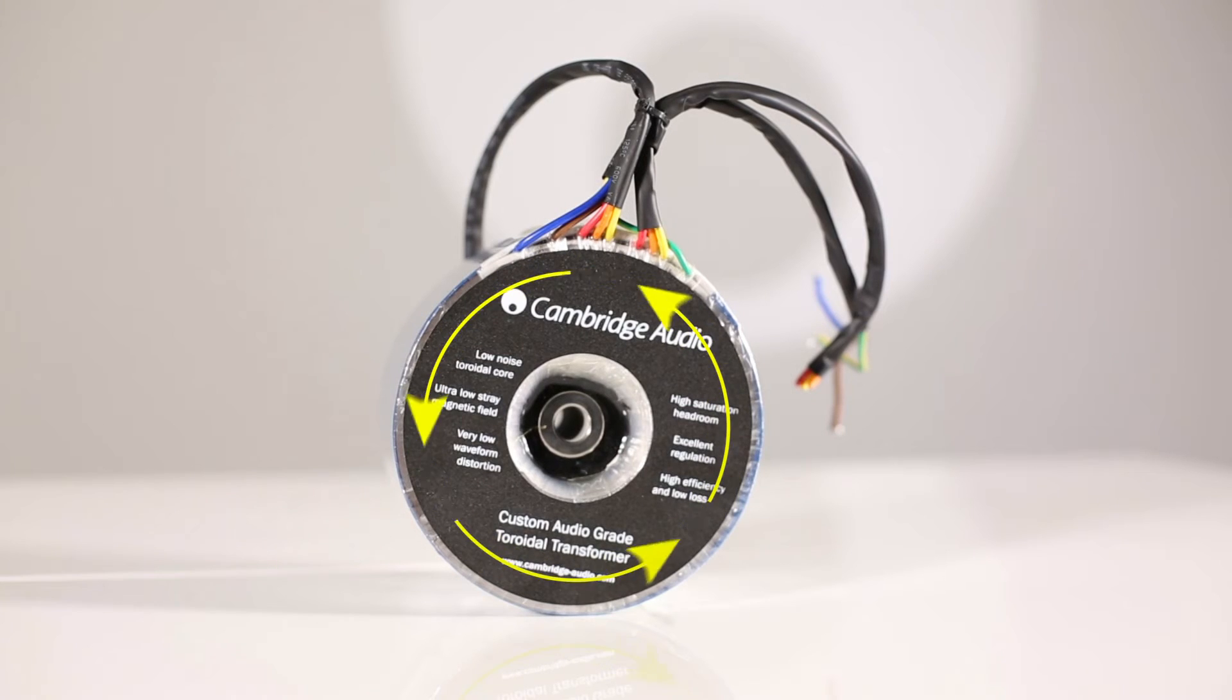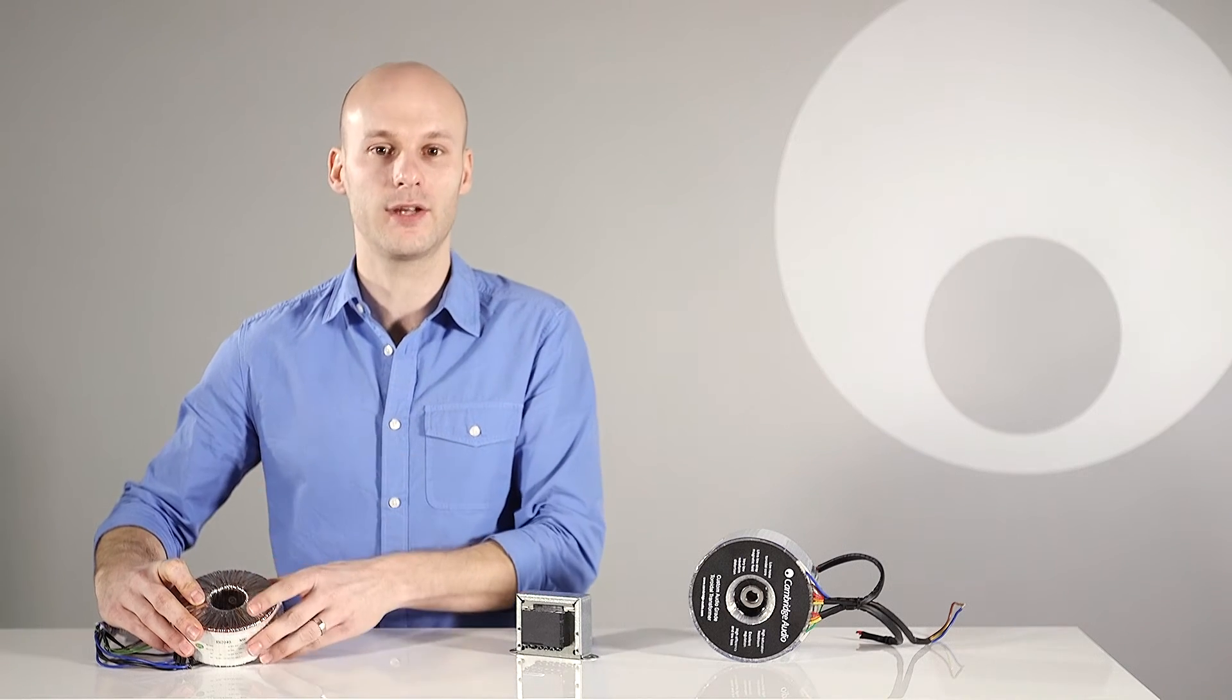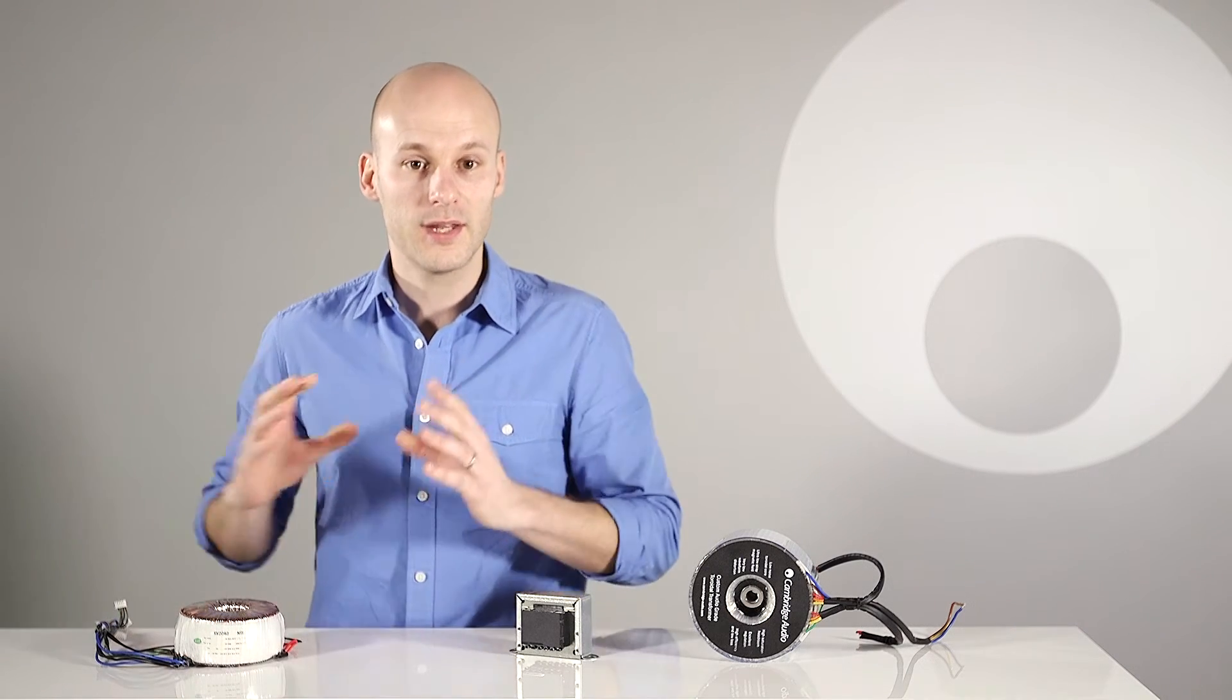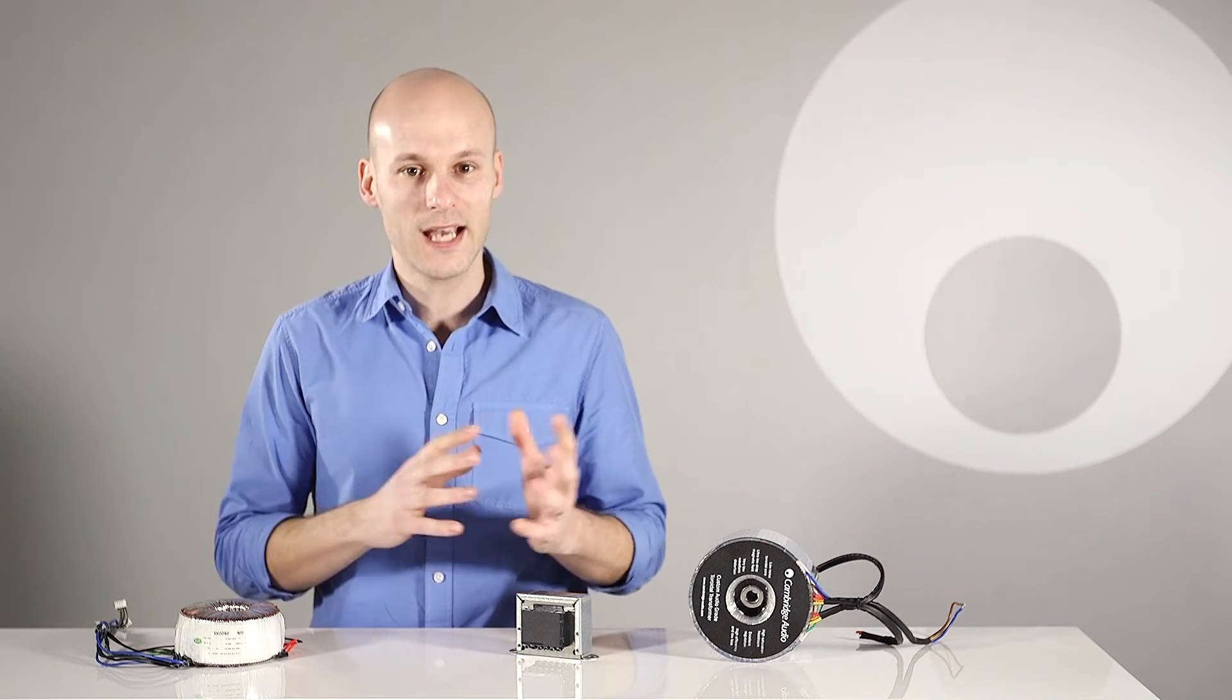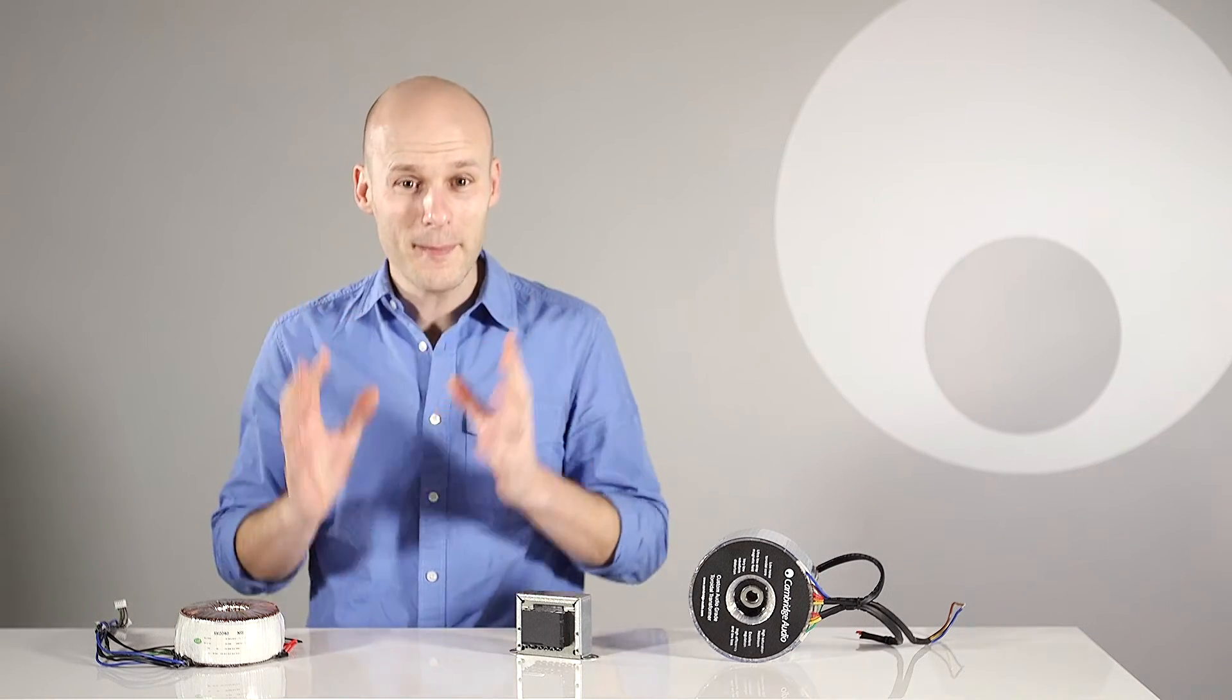With a toroidal transformer, the magnetic flux also flows around the transformer's core, but now any electromagnetic interference is contained within the doughnut shape. This stops interference with any other components and reduces audio distortion, resulting in much better sound.